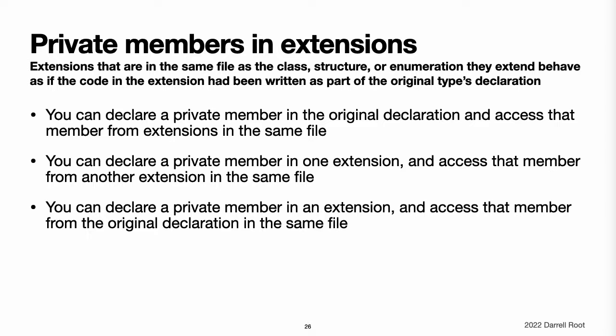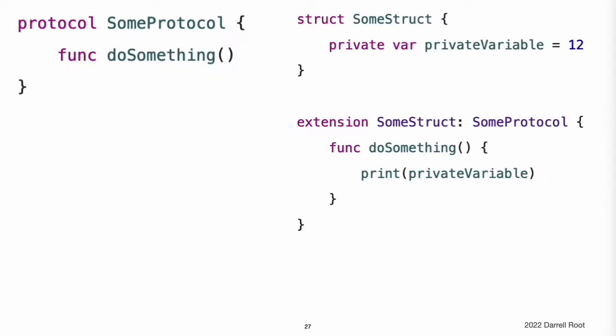Private members and extensions. Extensions that are in the same file as the class, structure, or enumeration that they extend behave as if the code in the extension had been written as part of the original type's declaration. This behavior means you can use extensions in the same way to organize your code, whether or not your types have private entities. For example, given this simple protocol, you can use an extension to add protocol conformance like this.